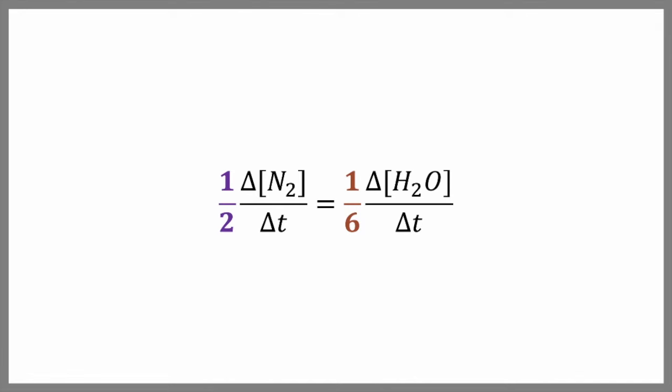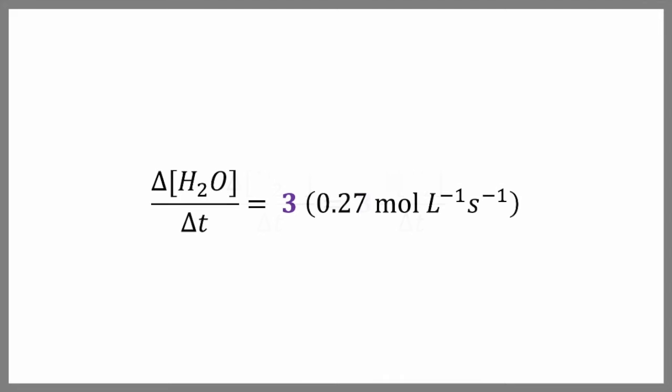In order to find the rate of formation of water, we are going to do a little algebraic manipulation here. Then we are going to plug in our value, 0.27 moles per liter per second, and we get 0.81 moles per liter per second.